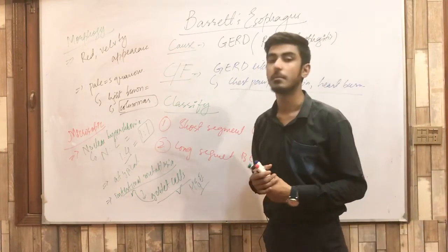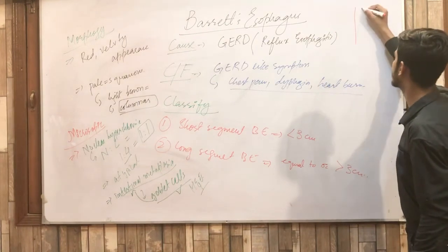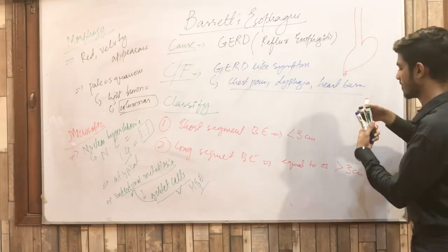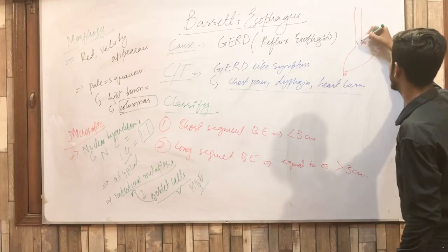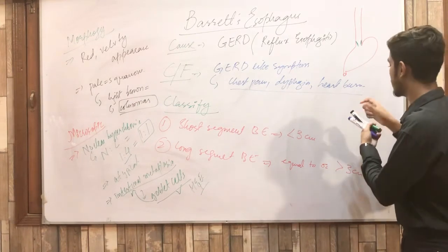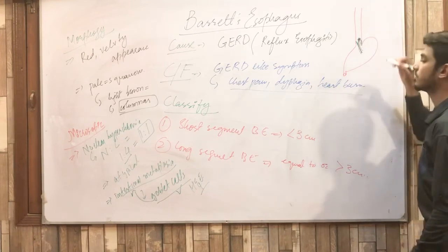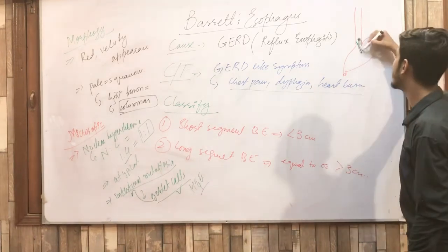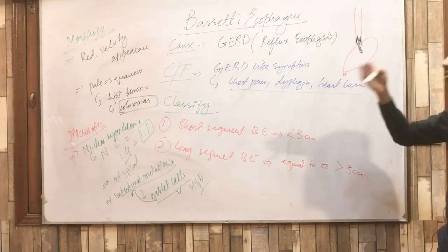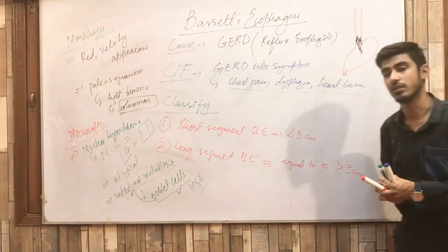To illustrate with a diagram: this is the esophagus, this is the stomach, and the lower esophageal sphincter is relaxed. When the contents of the stomach continuously reflux backward chronically, it results in esophagitis, and chronically it leads to a change in the epithelium of the esophagus, resulting in Barrett's esophagus.